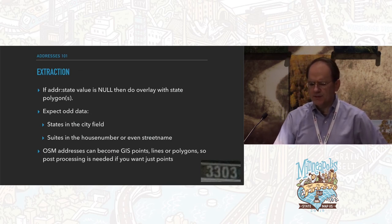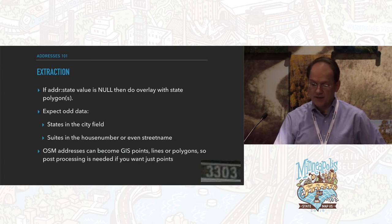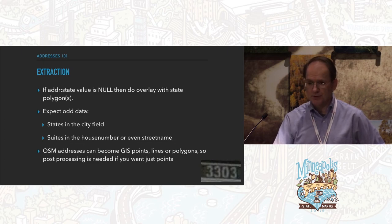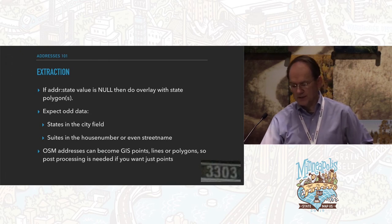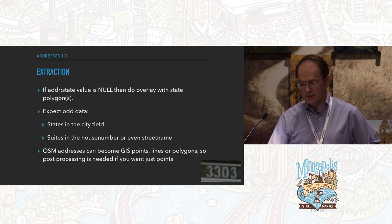What I do when I extract data: in my day job I've been trying to use some of this data. So if addr:state is null, I overlay polygons. If you're extracting stuff out, expect odd data — states in the city field, suites in the house number or street name. People don't always know where to put things, so they'll just drop it anywhere. Also, an address can become a GIS point, line, or polygon, so you may have to do post-processing.